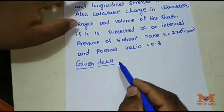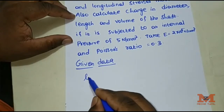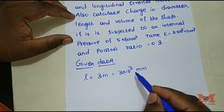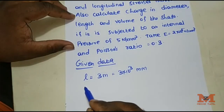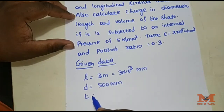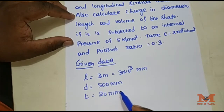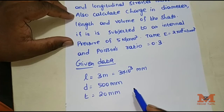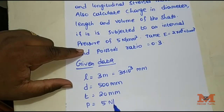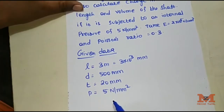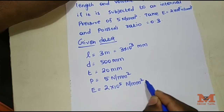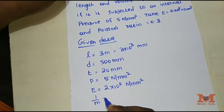Given data: length L = 3m = 3×10³ mm. Diameter D = 500 mm. Thickness T = 20 mm. Internal pressure P = 5 N/mm². Young's modulus E = 2×10⁵ N/mm². Poisson's ratio 1/m = 0.3.